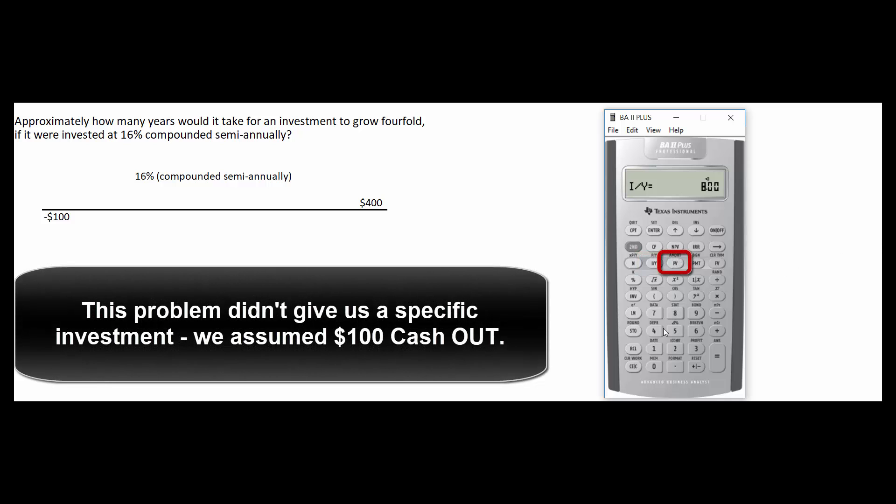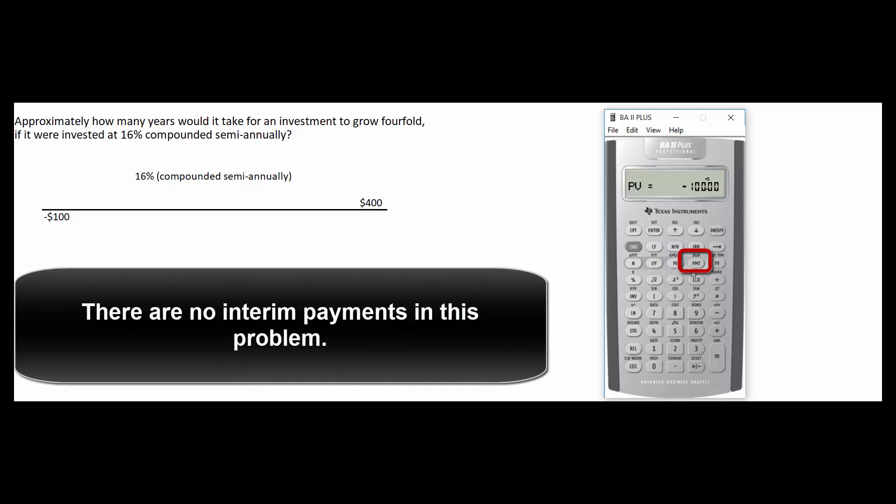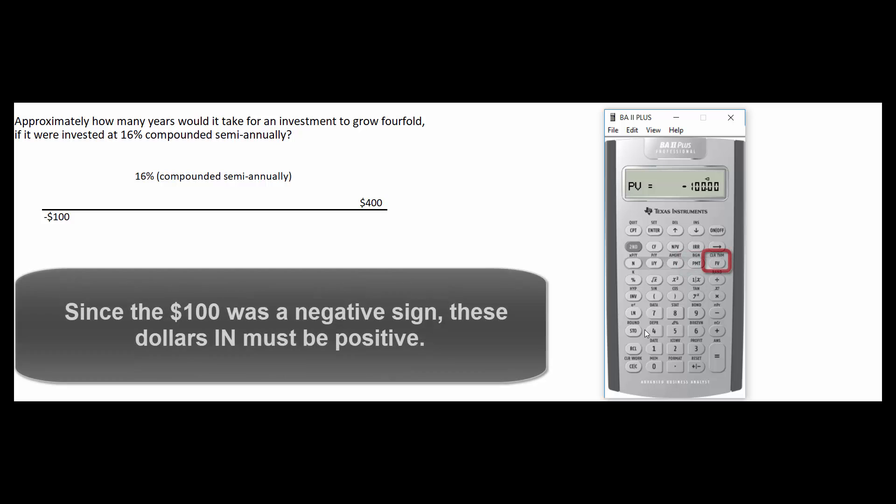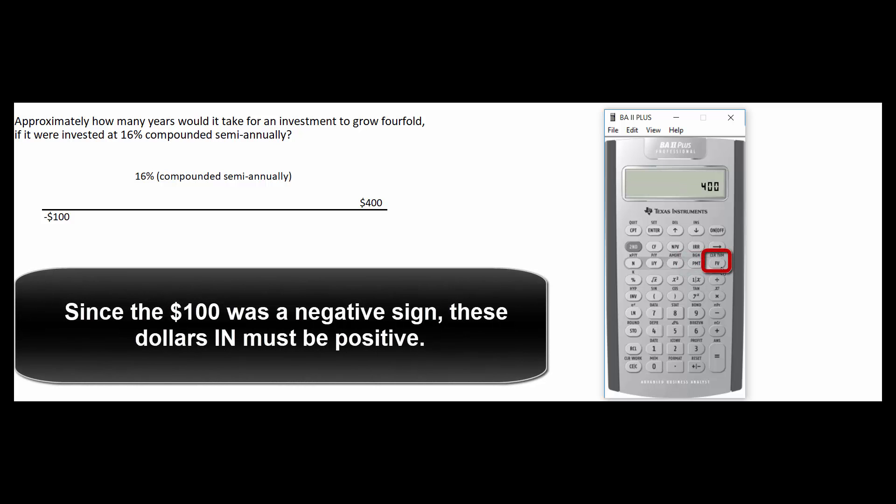What's the PV? In this case I decided it was a hundred dollars. Change that to dollars out. PV. Payment there is none in this problem. But the future value is the 400 positive. 400 future value. Now we're going to solve for the N.